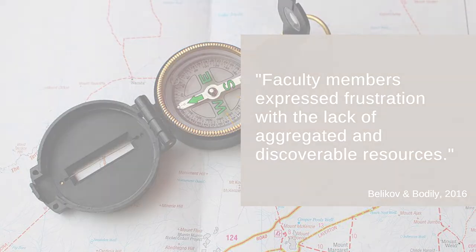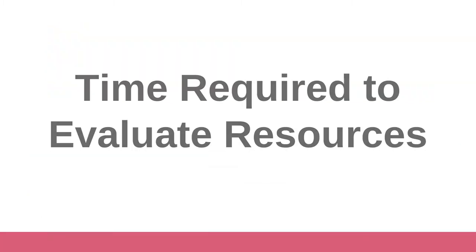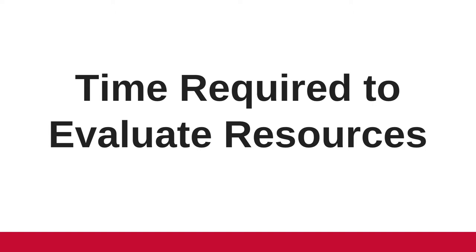However, things are improving. Finding open educational resources has become much easier as high-quality OER repositories like OER Commons and the Open Textbook Library have been developed. Furthermore, some tools, like George Mason University's OER MetaFinder, provide a method for searching multiple repositories from a single place. You can help some of these repositories stay relevant and up-to-date by donating to their cause. But finding OER isn't the only issue — educators also need to spend time locating and evaluating these resources, and often their work isn't truly valued. But that's starting to turn around too.